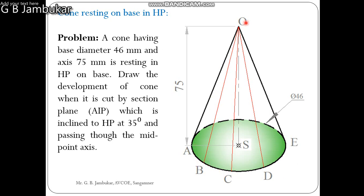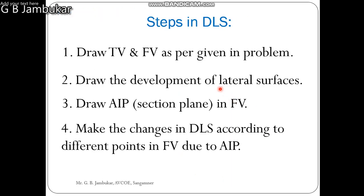This circle is divided into 8 equal parts: A, B, C, D. Point A is connected to O — these are called generators. OB is a generator, OC is a generator, OD is a generator. A to E is the diameter of the base circle. Now when we observe the front view of the cone, it is an isosceles triangle. The length of this isosceles triangle will be the diameter of the base circle and the height will be the axis height of the cone. Now we start with the problem statement.